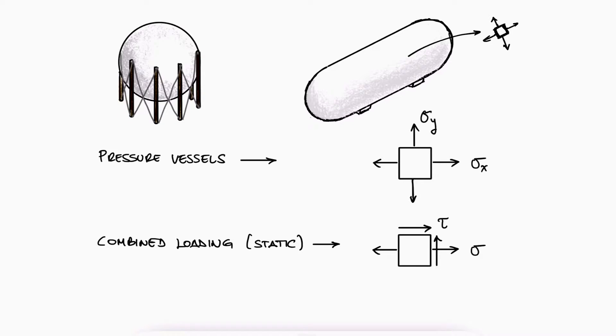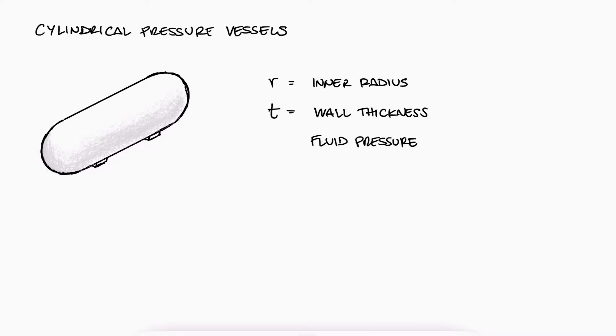For cylindrical pressure vessels, we refer to the radius r as the inner radius and lowercase t to the wall thickness. The fluid pressure inside it is just lowercase p and it refers to the gauge pressure, which is the difference between the absolute pressure and the atmospheric pressure outside the tank.